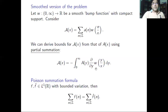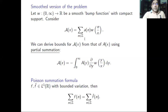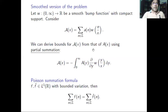If we have an estimate for the sharp cutoff sum, we can recover an estimate for the smooth version. However, the other direction is not always true: a good bound for the smooth sum does not necessarily imply a good bound for the sharp cutoff.